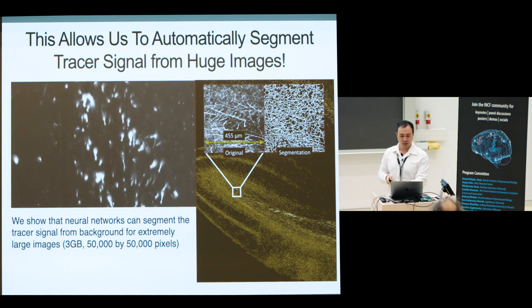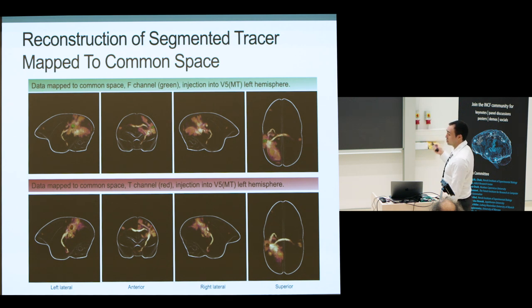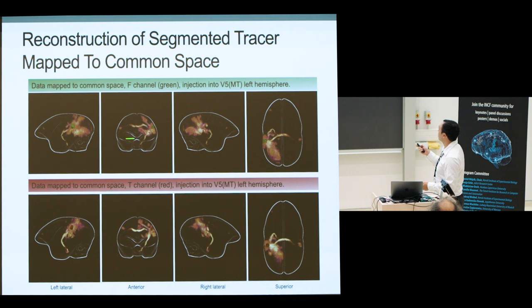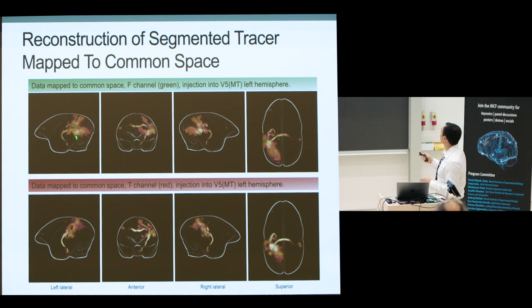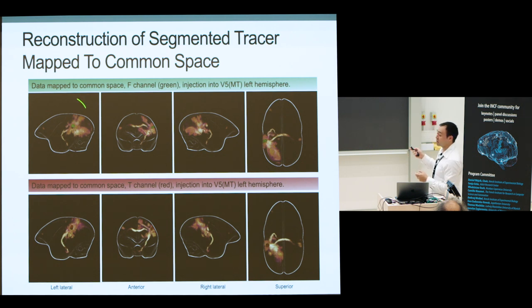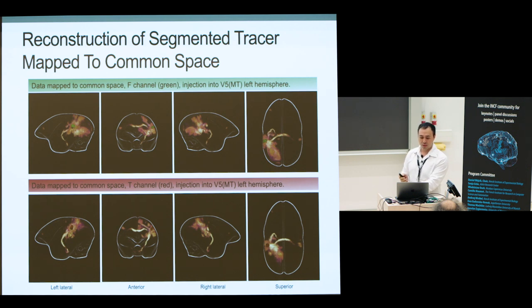What does the result look like once we map everything into the common brain space? Here are some reconstructions for one injection into MT. The first row is the green tracer channel and the second row the red tracer. You can see the injection sites, and interestingly, even though both are in MT — the red injection being more superior and the green slightly lower — the projection patterns vary. This is why it's interesting to study intrinsic connectivity within regions and not just make summary region-to-region connectivity matrices.